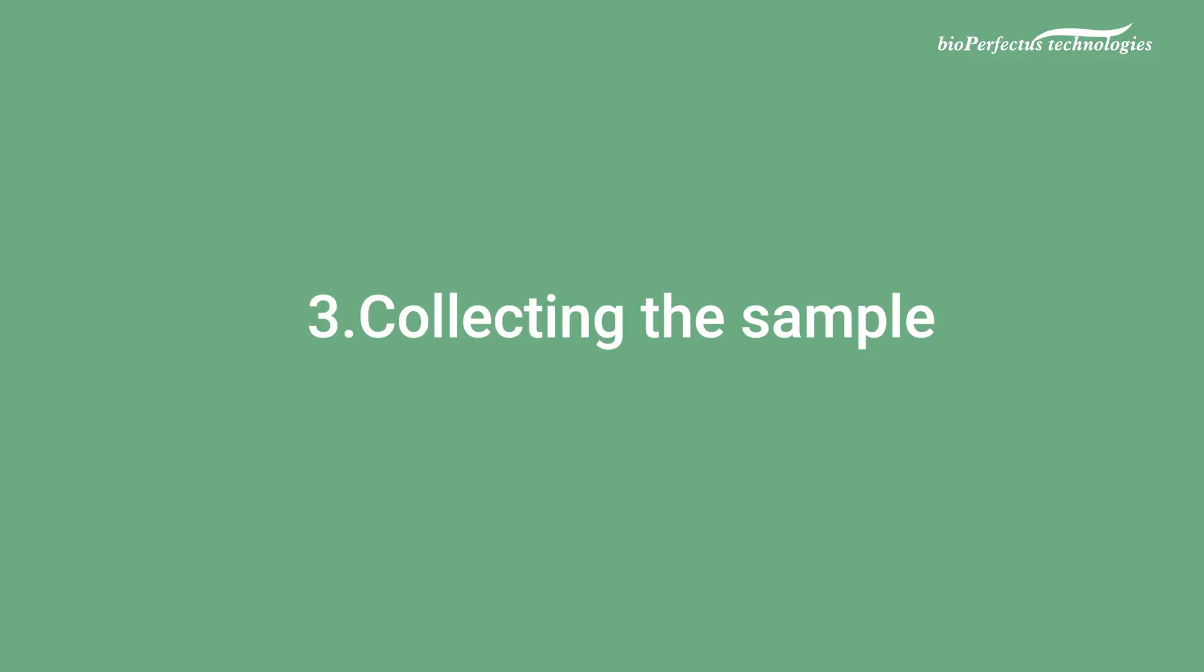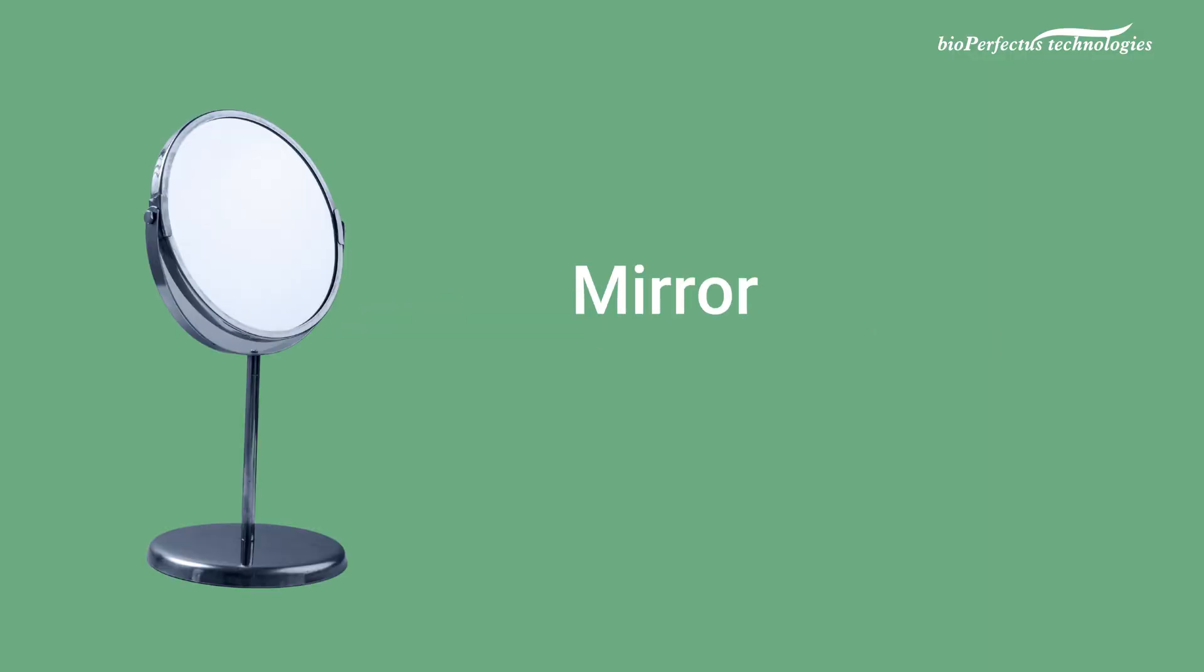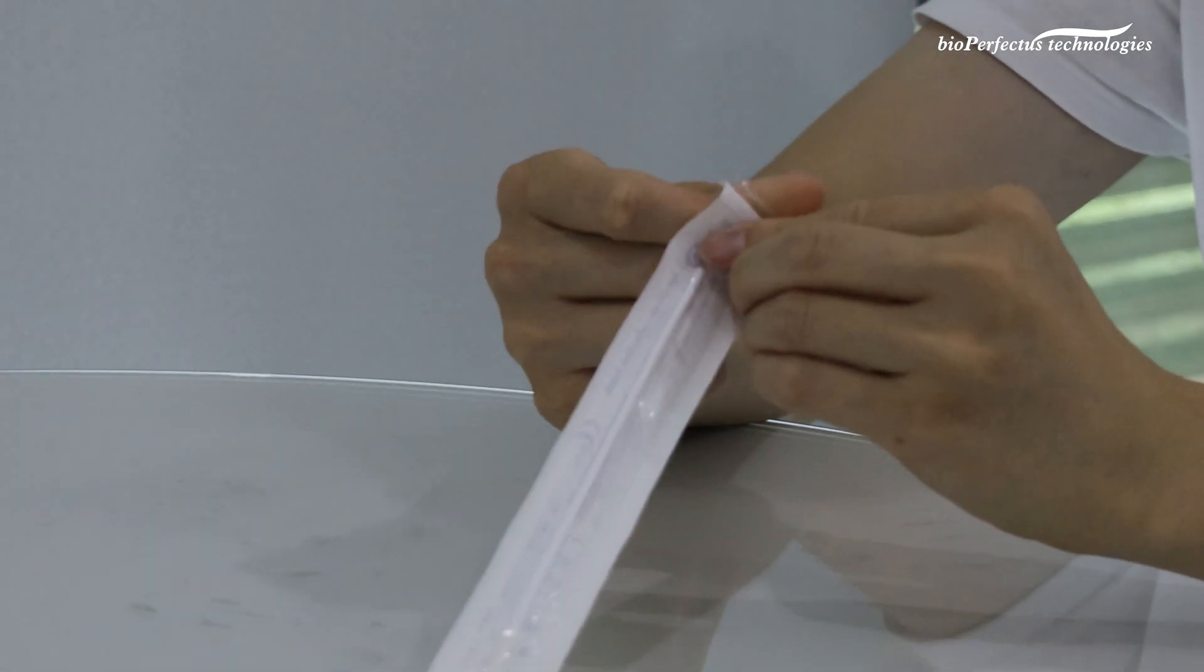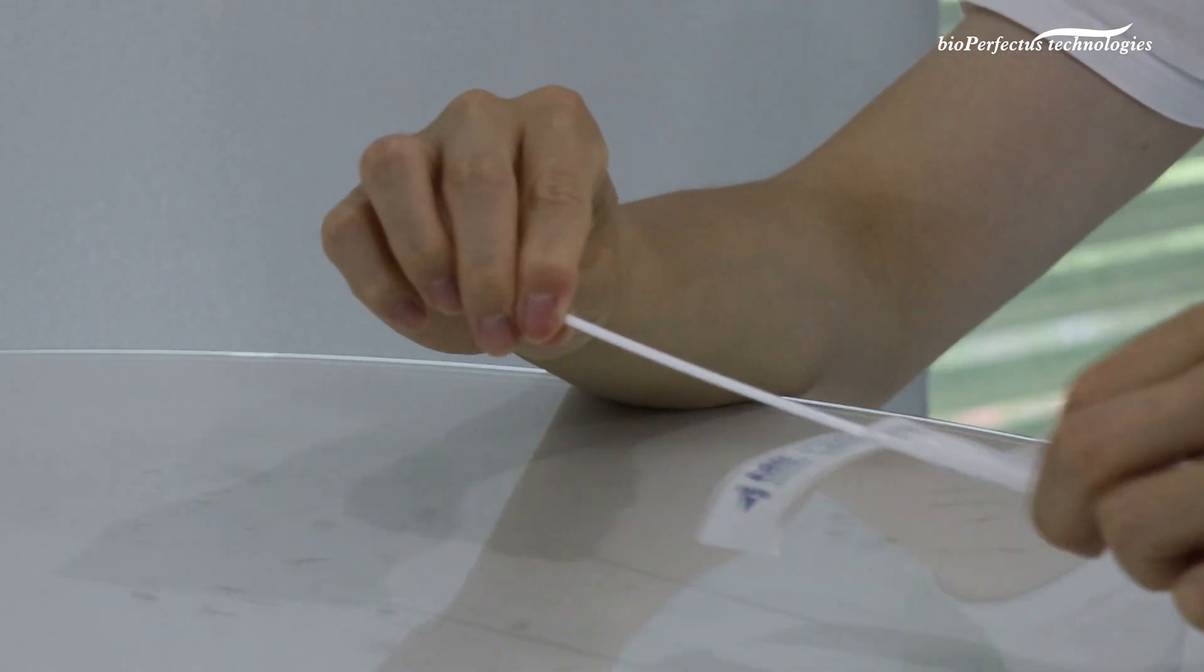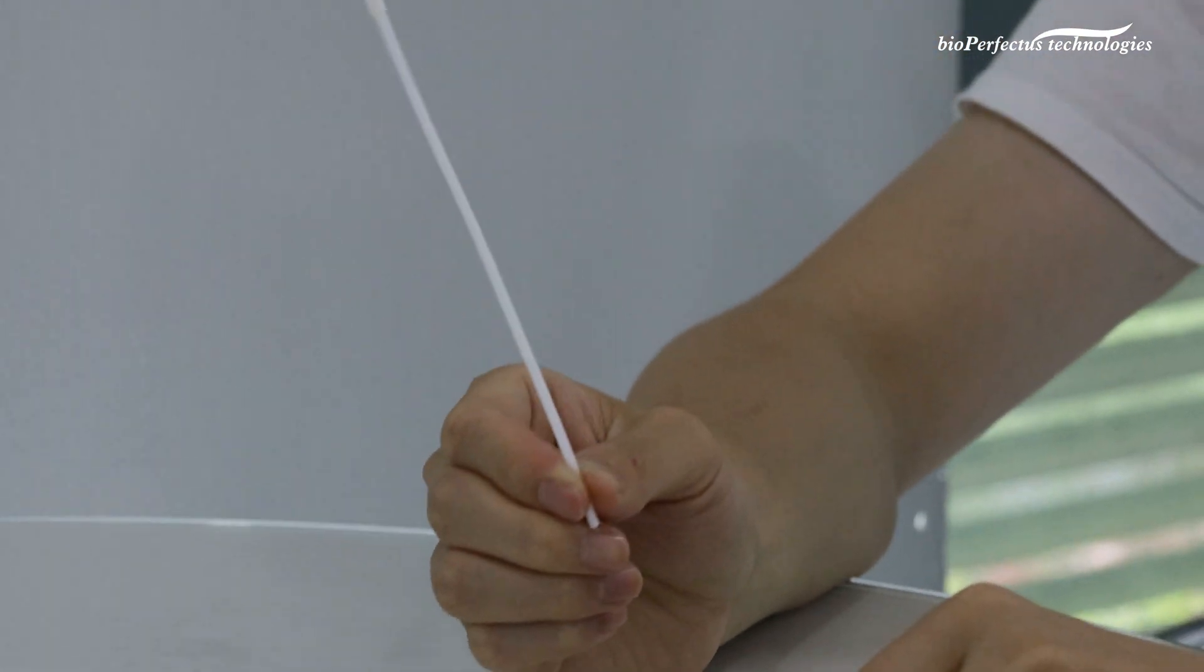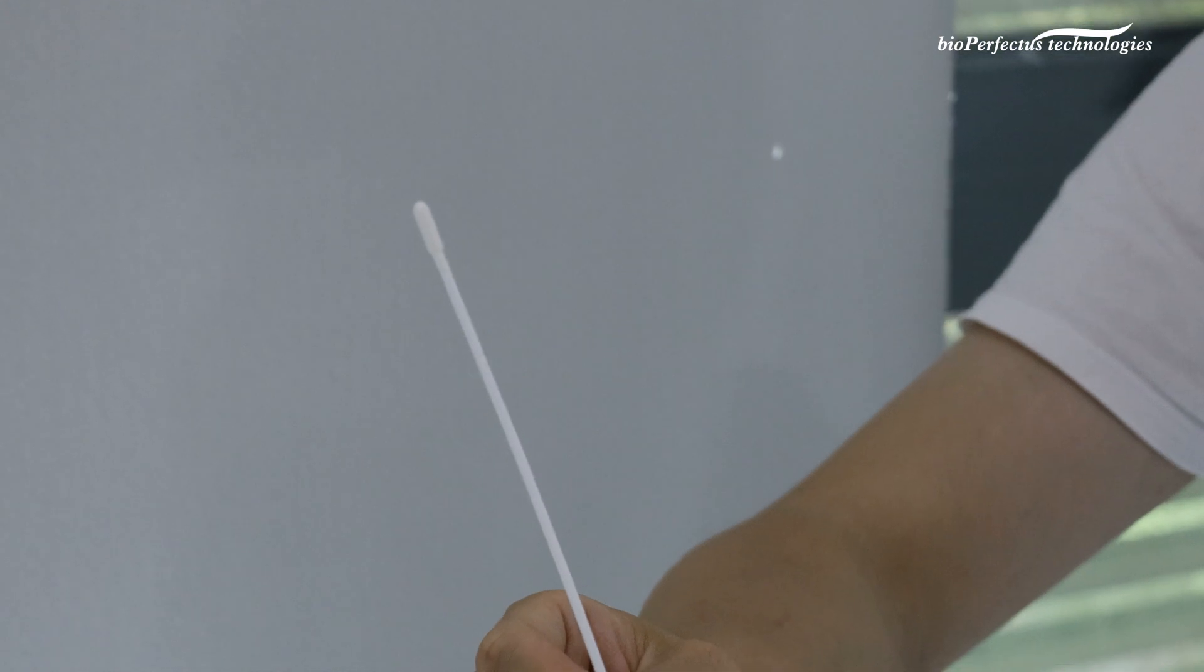Step 3: Collecting the sample. You can use a mirror to help you do this correctly. Remove the swab from the packet. Make sure you do not touch the soft part of the swab.